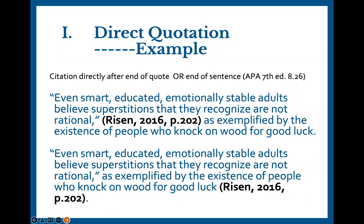In the following example, the direct quote is the beginning of our sentence: 'Even smart, educated, emotionally stable adults believe superstitions that they recognize are not rational.' The remainder of the sentence is paraphrased, that is, put into our own words. The reader knows this by seeing the first half of the sentence enclosed in quotation marks, while the remainder is not. The text in quotes has been copied exactly word for word from the original source, which is cited in the in-text citation here in parentheses. This is called a parenthetical in-text citation. The citations have been made bold to make them stand out better on the examples — you should not do this in your paper.